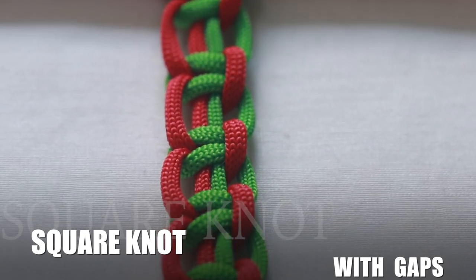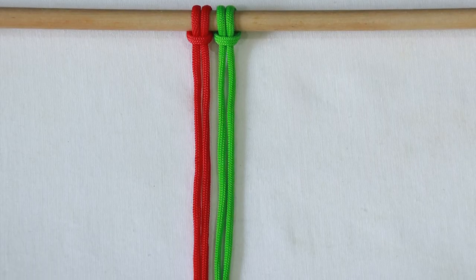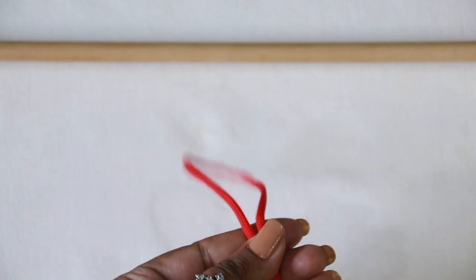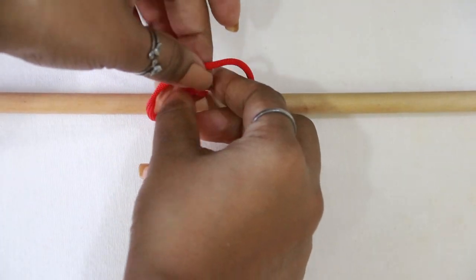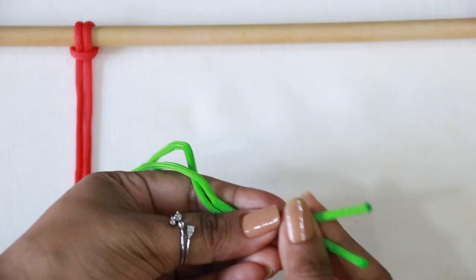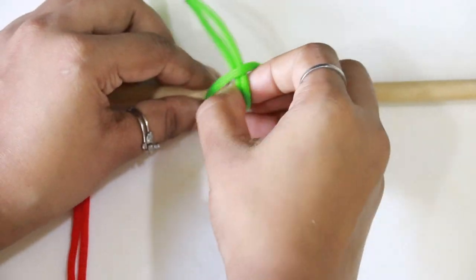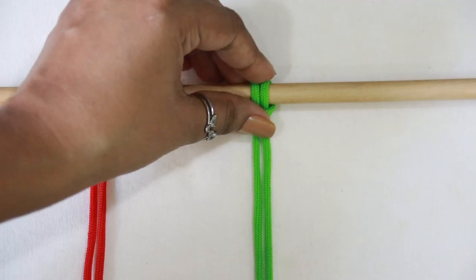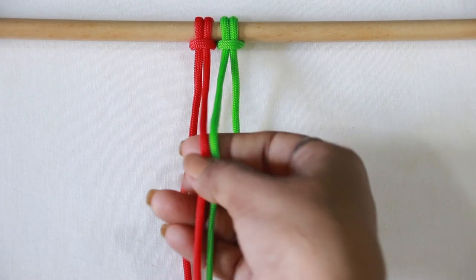For a basic square knot with gaps, you need four strands. Start by making a lark's head knot for four strands—you need to make two lark's head knots. For other useful details and faster methods of making lark's head knots, you can check out the top button or in the description box. As you know, the middle two strands are filler cords.